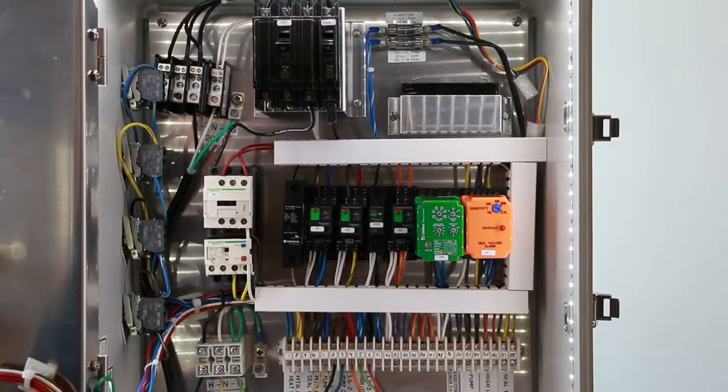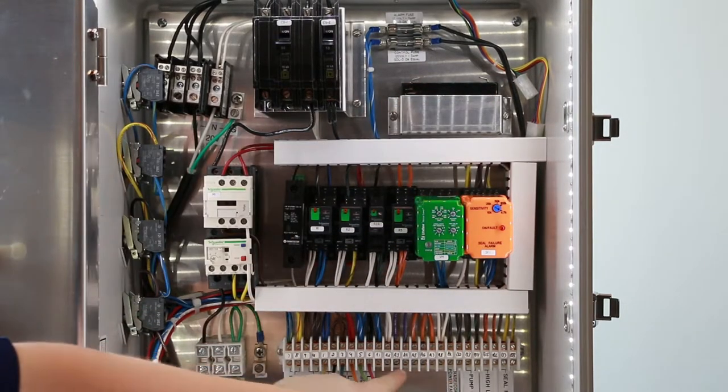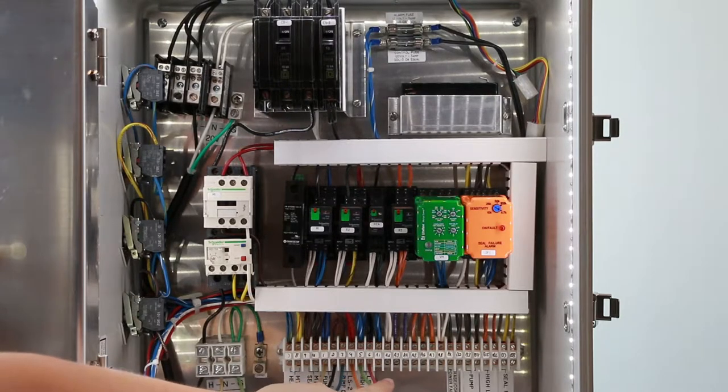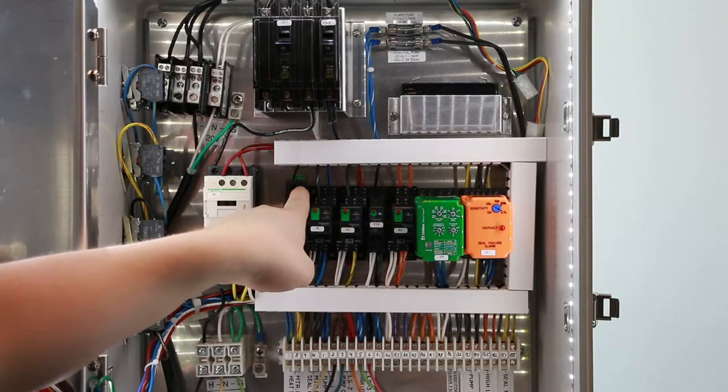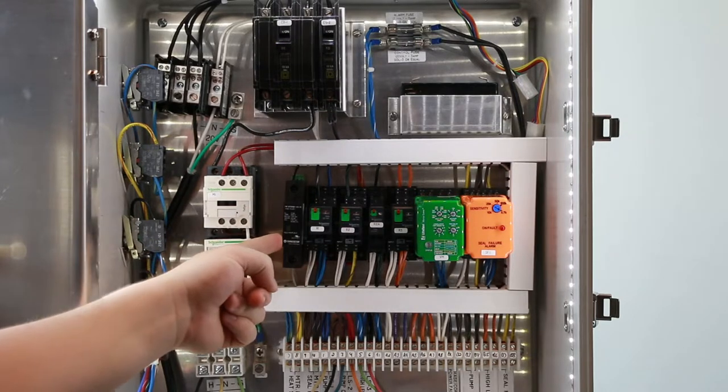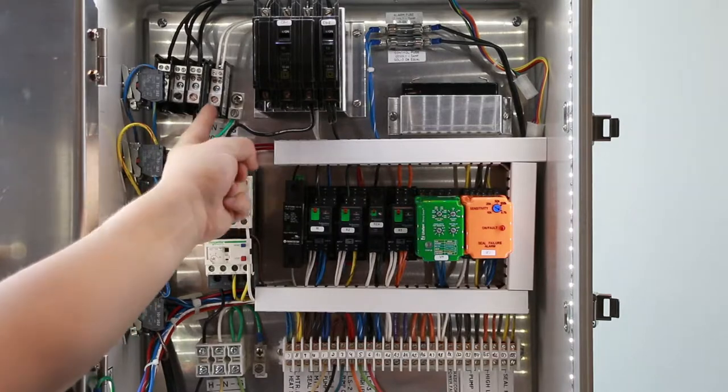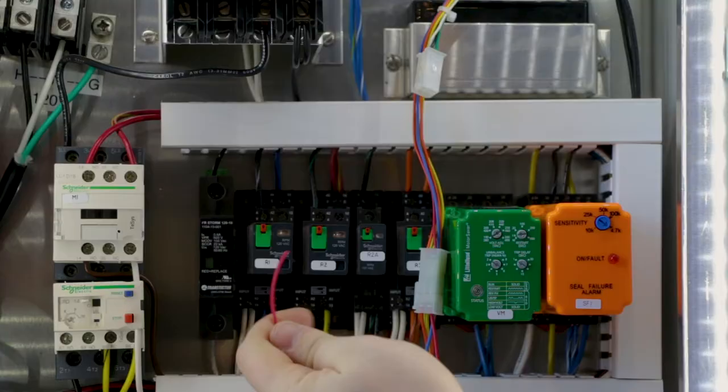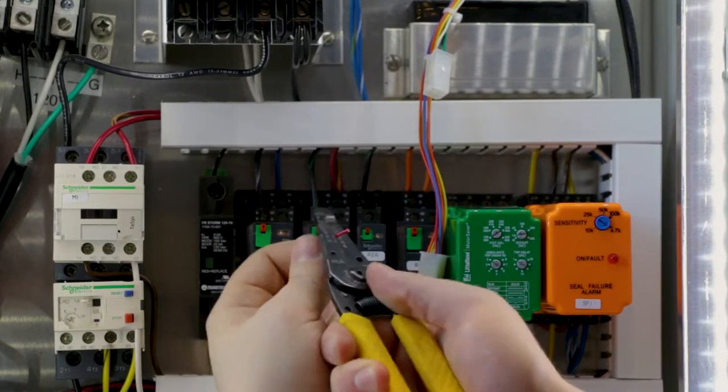You will now want to identify where each of the wires from your wiring harness will land inside your panel. The red and blue leads will go to the two terminals on the battery. The orange and yellow wires will go to alarm contacts within your panel. The black lead will land on a 120-volt source. In this panel, we are using the lightning arrestor. The green lead will land on the panel ground, and the white lead will land on the panel neutral. Cut the leads to length to reach the appropriate places in the panel, then strip the ends.